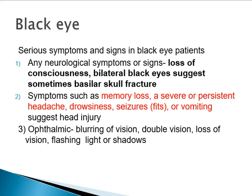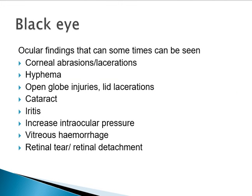Any symptoms of blurring of vision, double vision, loss of vision, flashing lights, or shadows always suggest a significant ocular injury. These patients need to be assessed by the ophthalmologist to rule out eye problems. Let us look at what ocular injuries can be found in a patient with black eyes.